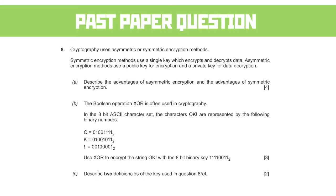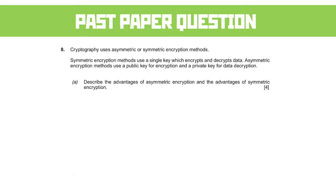Let's start with this cryptography question. Cryptography uses asymmetric or symmetric encryption methods. Symmetric encryption methods use a single key, which encrypts and decrypts data. Asymmetric encryption methods use a public key for encryption and a private key for data decryption.